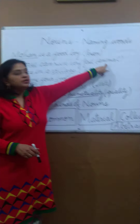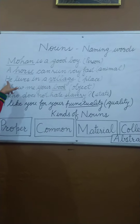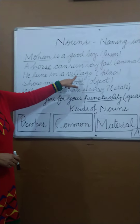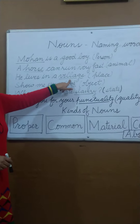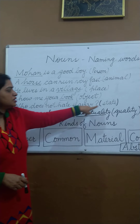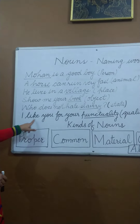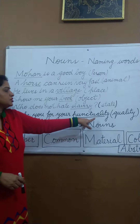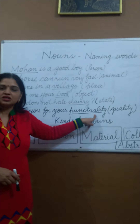Second: a horse can run very fast. Horse is the name of an animal. He lives in a village — village is the name of a place. Show me your book — book is the name of an object. Who does not hate slavery? Slavery is the state of a person, of anything. So it is a state.